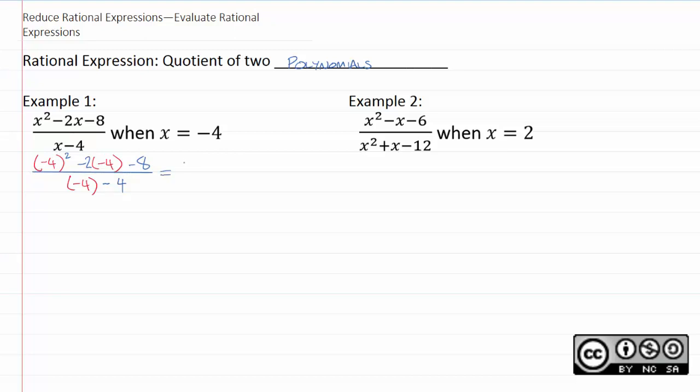Here, negative four squared is 16 plus eight minus eight. The bottom works out to negative four minus four. And then the arithmetic here should be pretty easy.